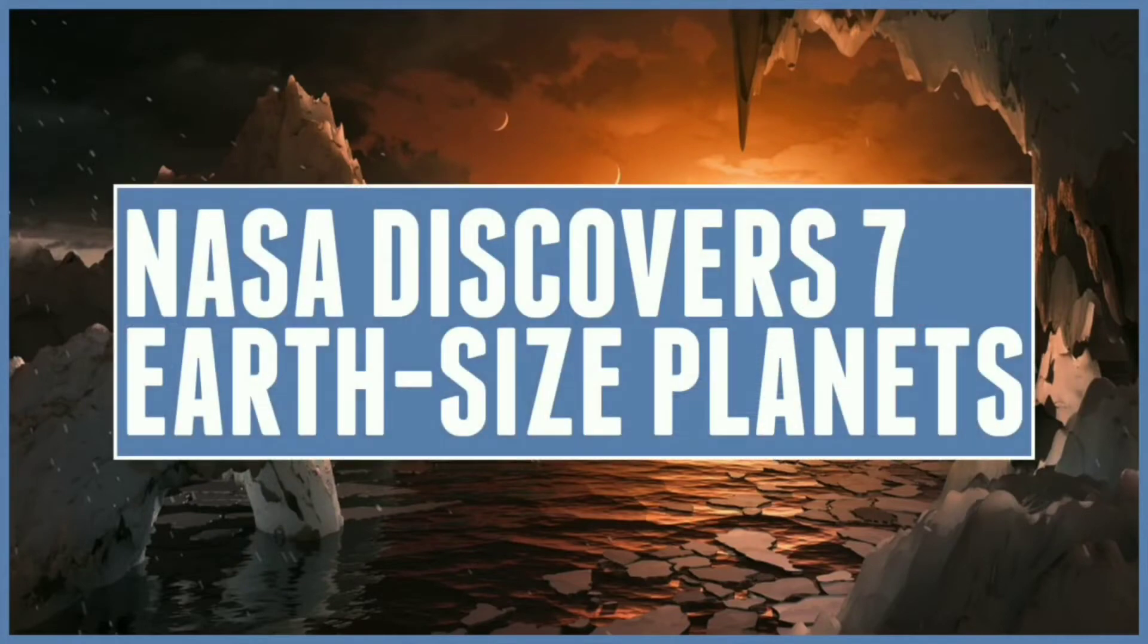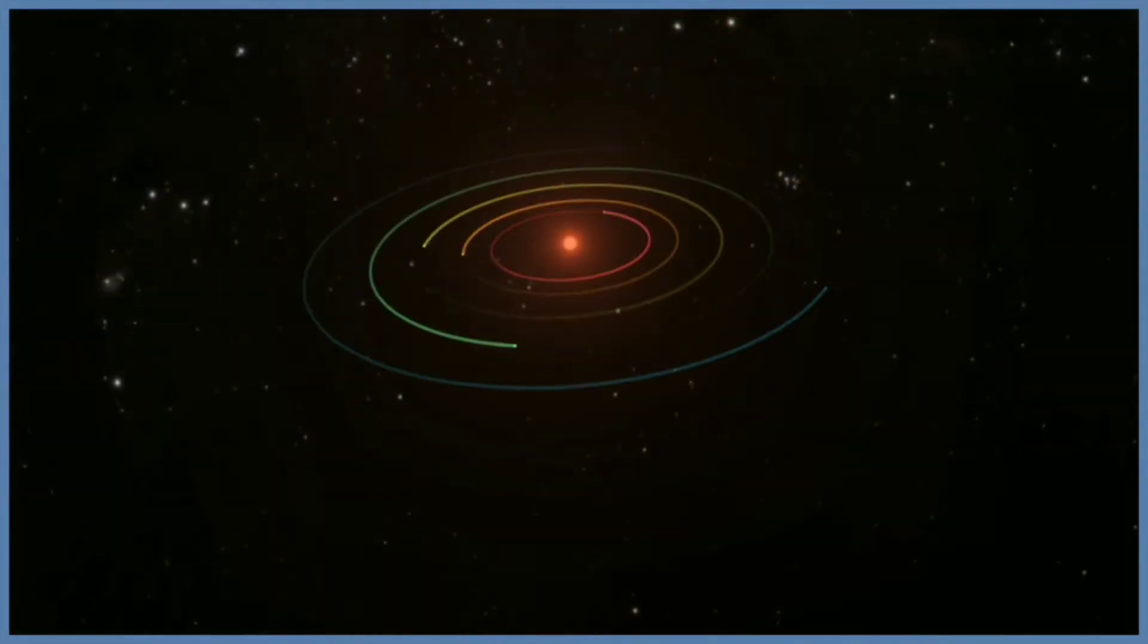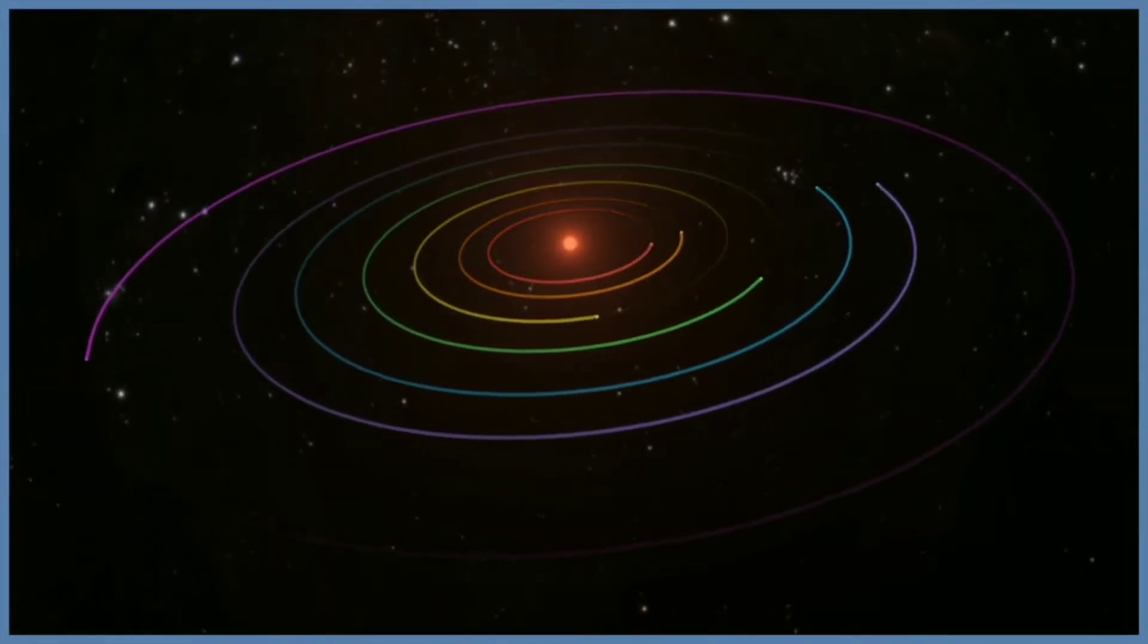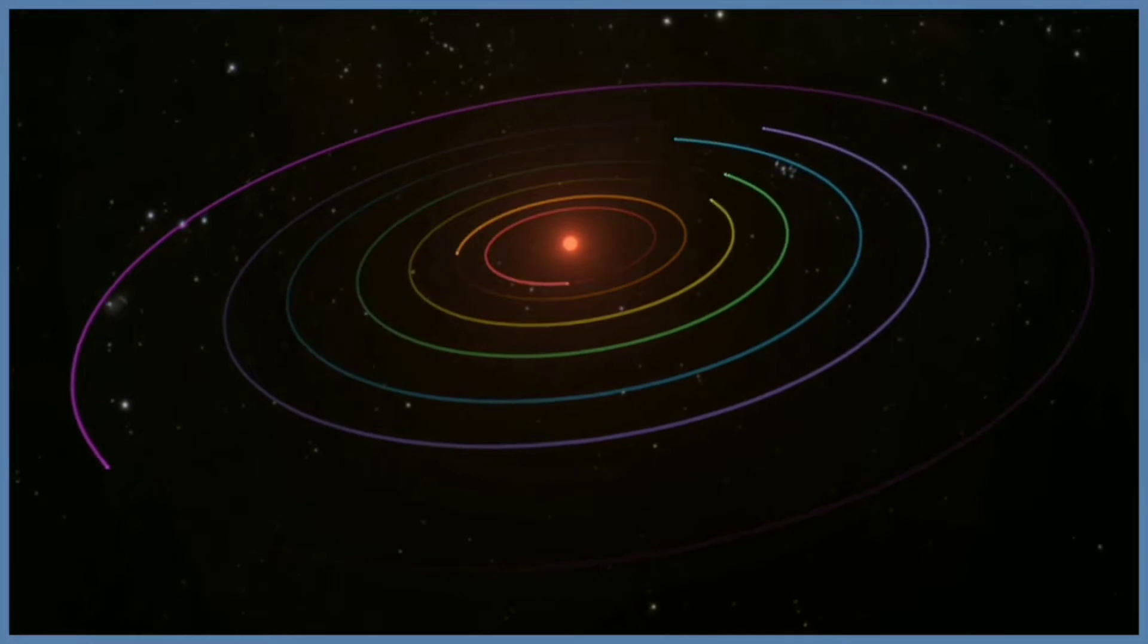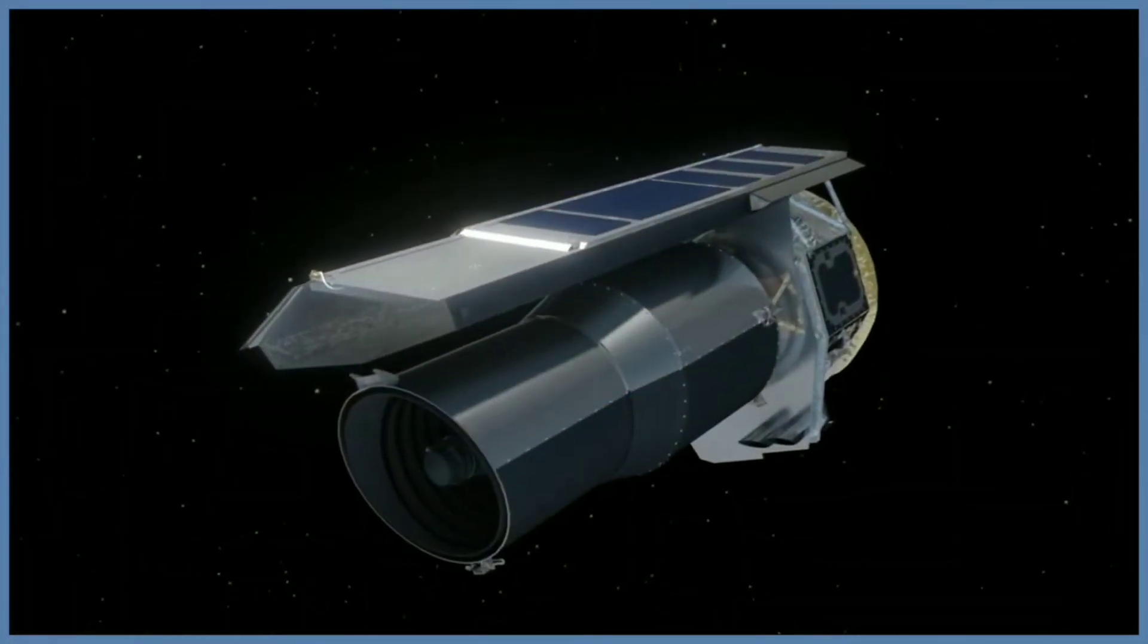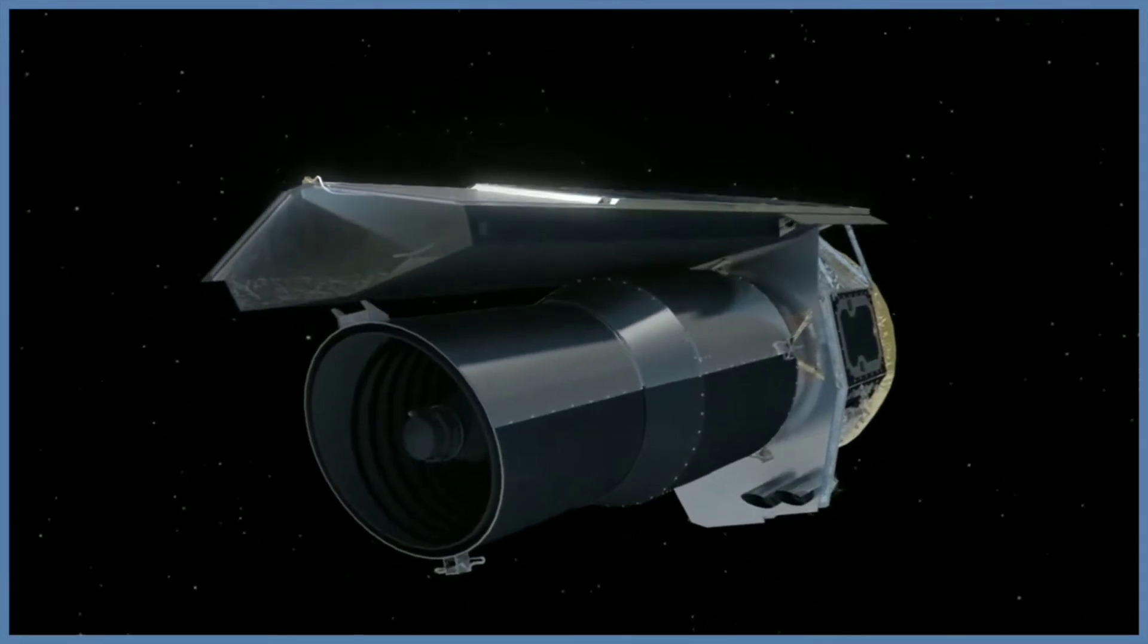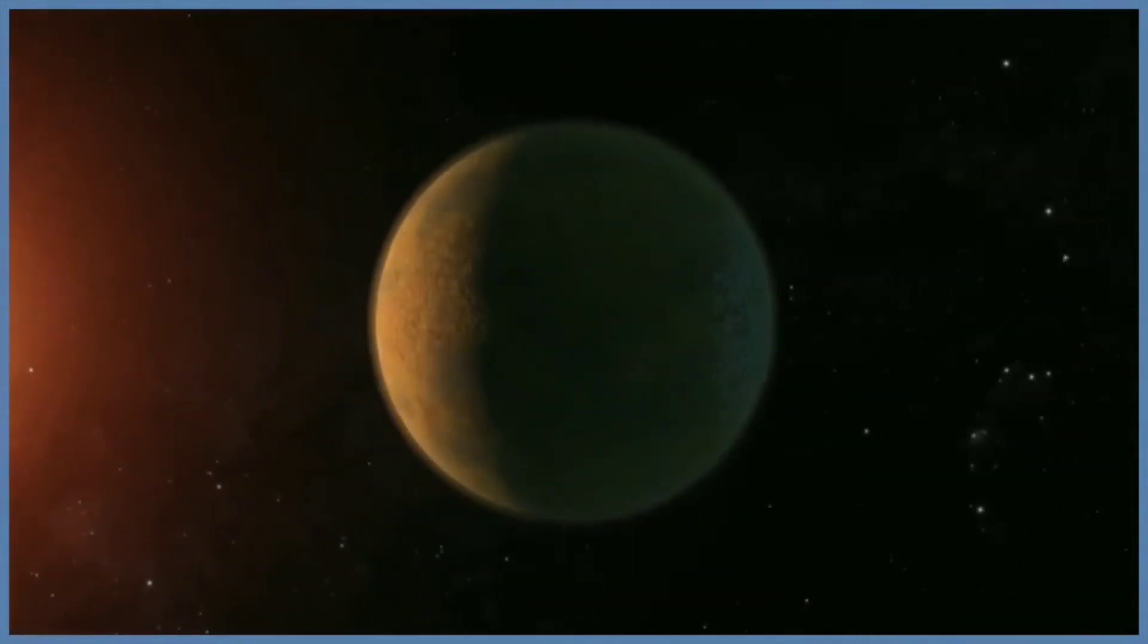Today we'll be talking about NASA's discovery of seven Earth-sized planets. A NASA telescope has revealed a large batch of Earth-sized habitable zone planets around just a single star. The Spitzer Space Telescope has revealed the first known system with seven Earth-sized planets around this star. Three of these planets are firmly located within the habitable zone.